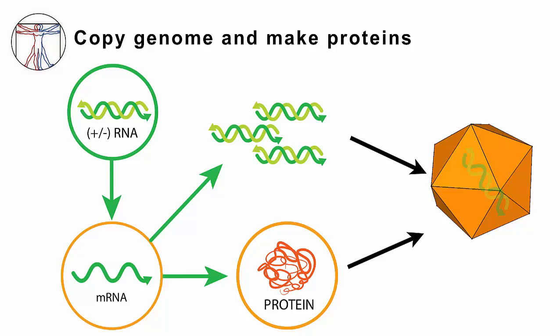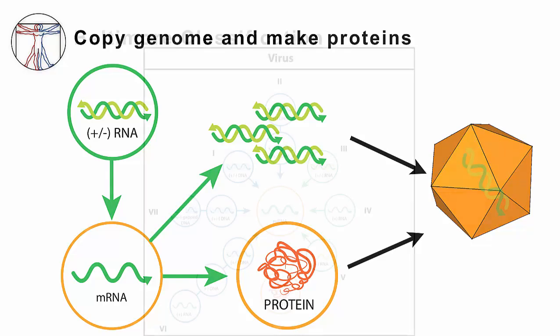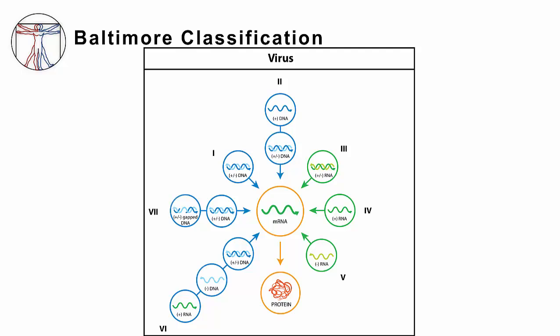The path from nucleic acid to mRNA to protein is the organizational scheme of the Baltimore classification. Viruses can be simply organized by their nucleic acid — DNA or RNA — and the Baltimore classification organizes viruses by their nucleic acid and by how they make messenger RNA. mRNA is the central link for all seven groups in the Baltimore classification, as shown in the image. This also highlights the diversity of viral nucleic acid compared to all other living things — all living things are only in group one.